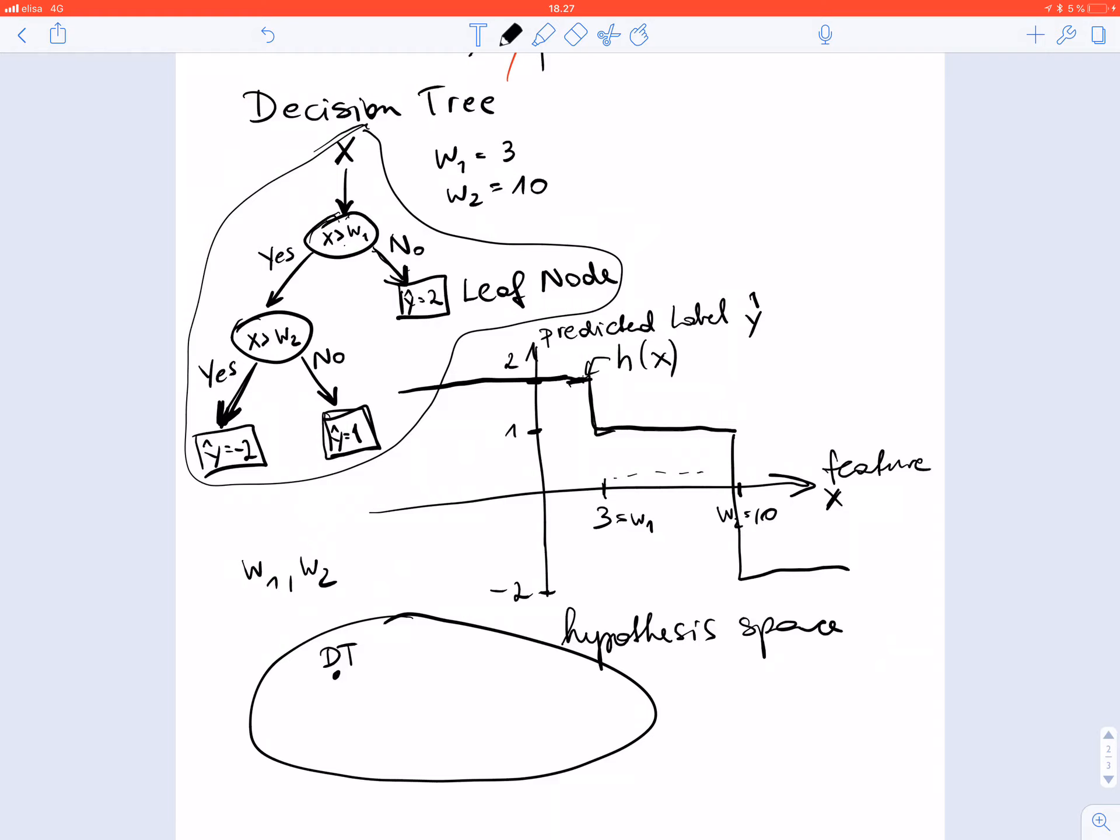This space consists of predictor maps which share the same structure, the same test nodes and sequence of test nodes, but the threshold values w1 or w2 are different for the different elements in this hypothesis space. This decision tree might be obtained for w1 equal 3 and w2 equal 10, while another predictor map is obtained using w1 equals 5 and w2 equals 20. We can identify each element in this hypothesis space by two numbers w1 and w2. This way we obtain a space of nonlinear predictor functions, where each predictor function is characterized by a flowchart-like representation called a decision tree.